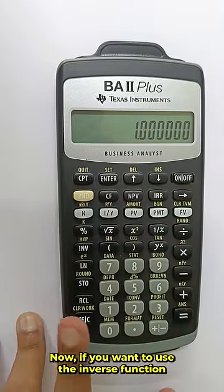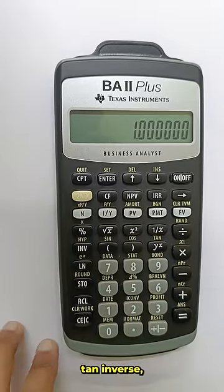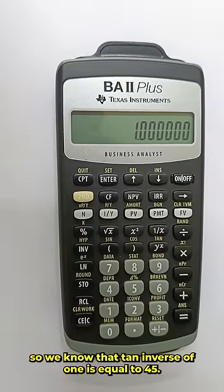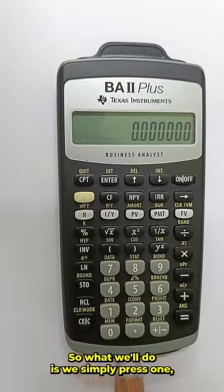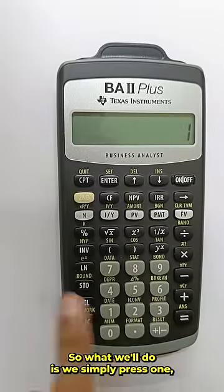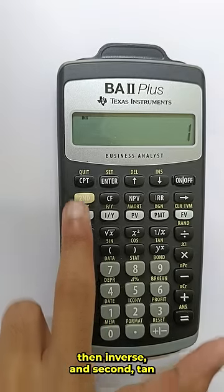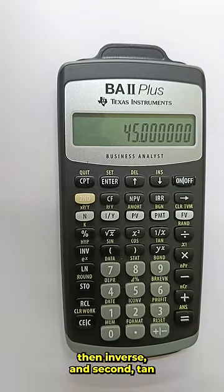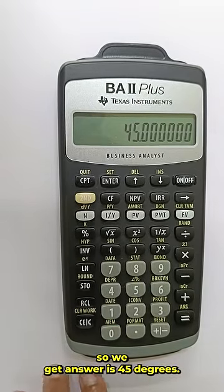Now if you want to use the inverse function tan inverse, we know that tan inverse of 1 is equal to 45. So what we will do is simply press 1, then inverse, and second, tan. So we get the answer is 45 degrees.